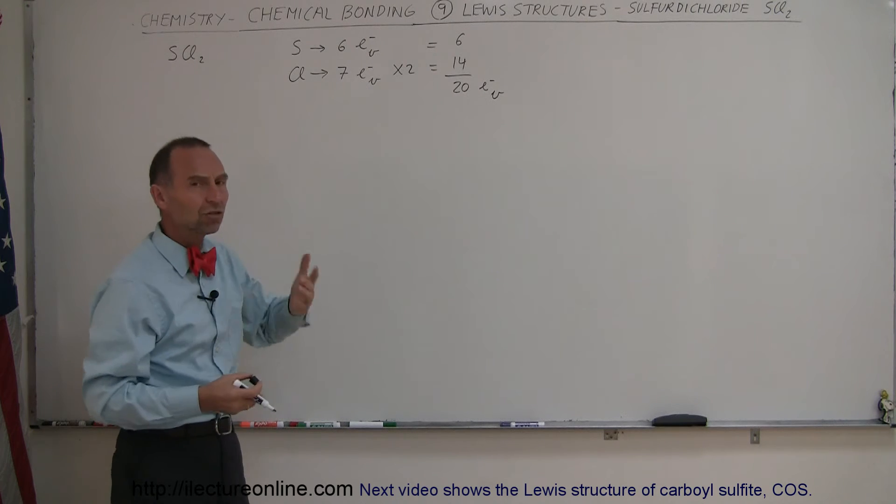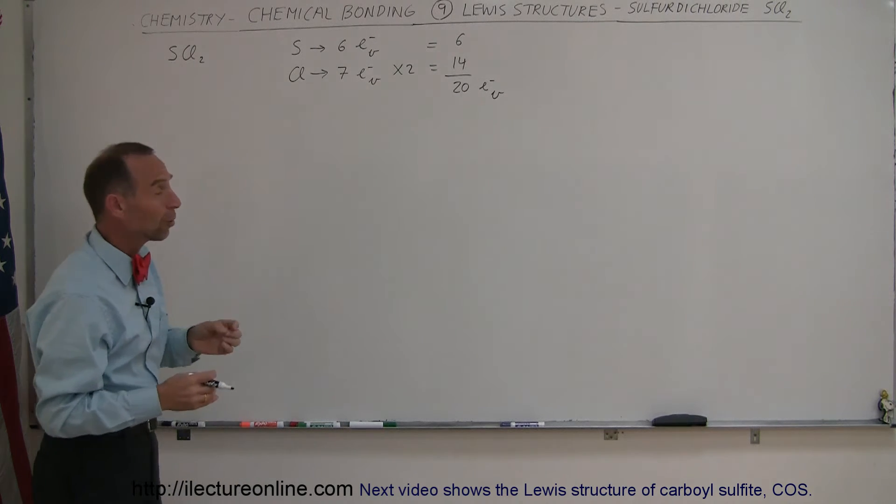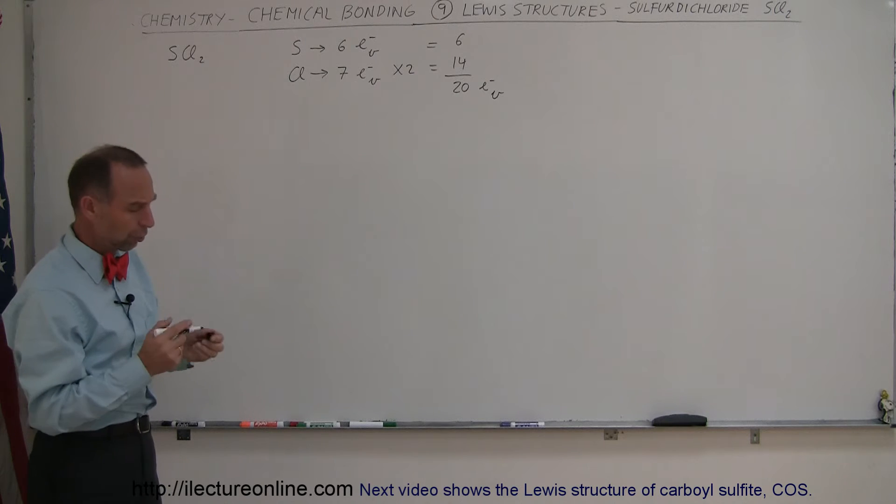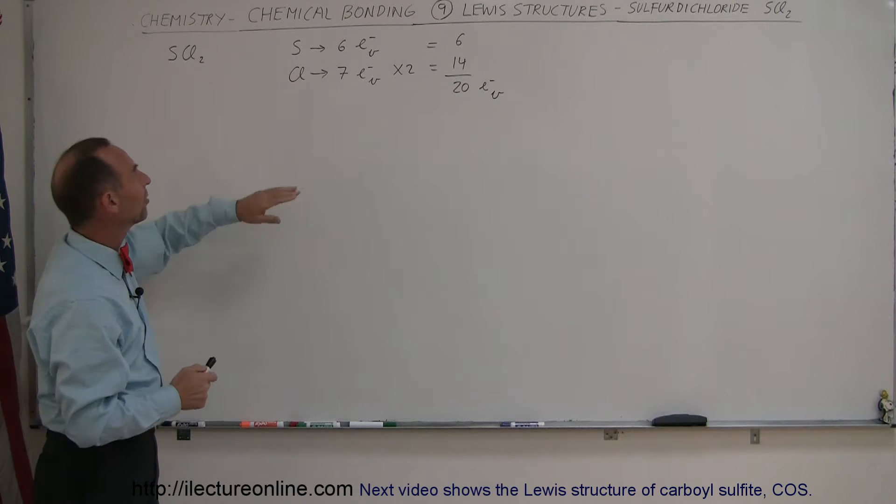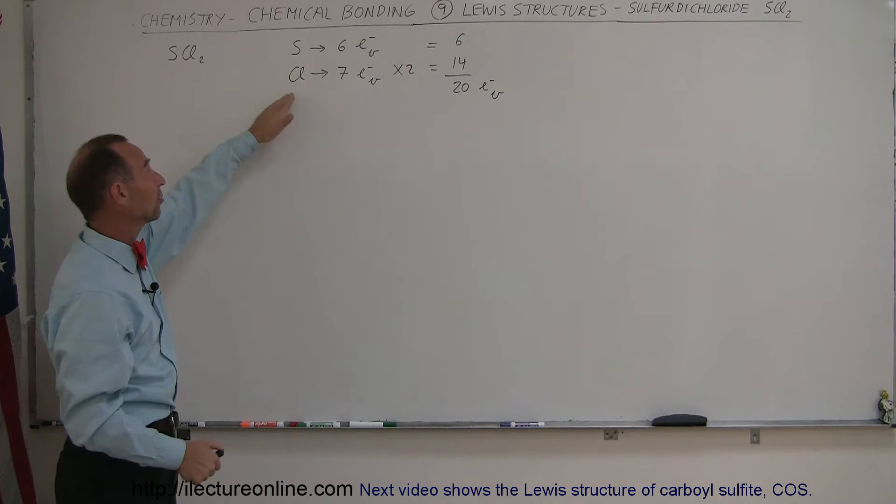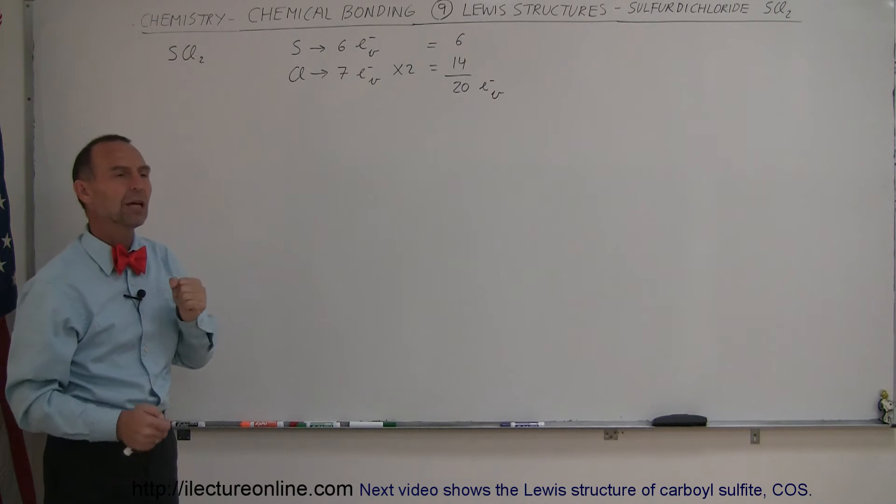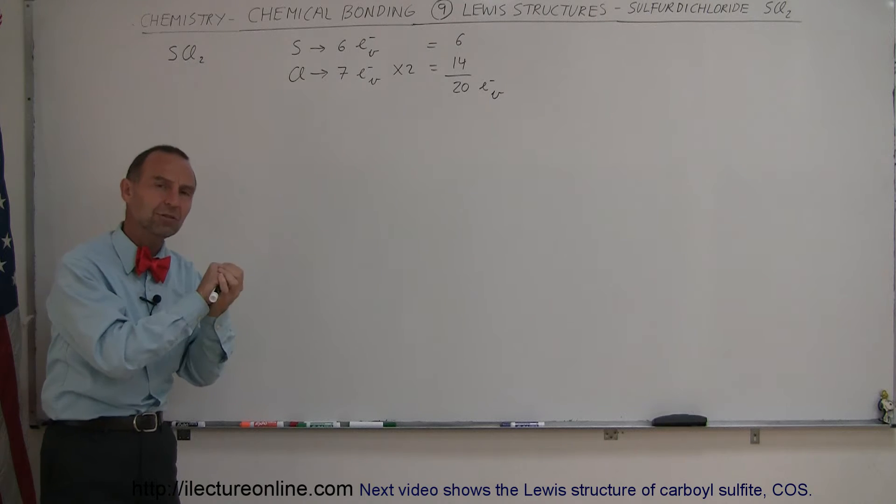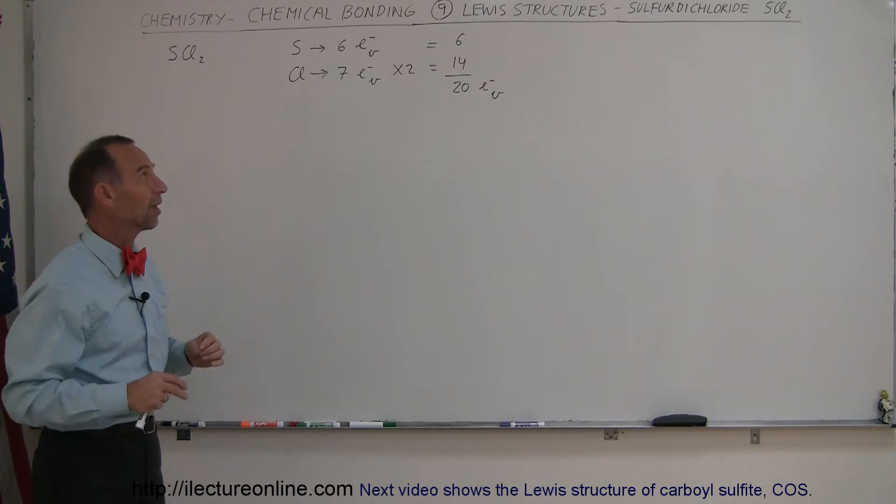Chlorine, only needing one additional valence electron, could accomplish that by only making a single bond. From our rule, since sulfur has a lower electronegativity and fewer valence electrons, and chlorine has a higher electronegativity, we expect sulfur to be in the center and chlorine being on the sides.